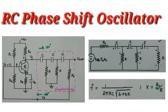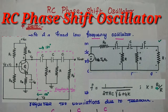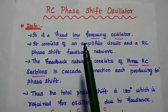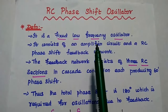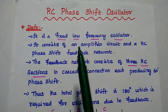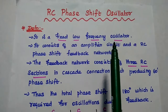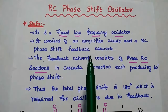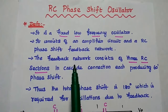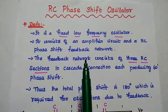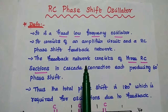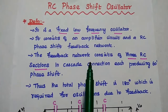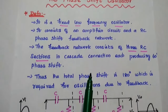Dear students, now we are going to discuss RC phase shift oscillator and its derivation in detail. RC phase shift oscillator is a fixed type low frequency oscillator. It consists of an amplifier circuit and feedback circuit which consists of only resistors and capacitors.